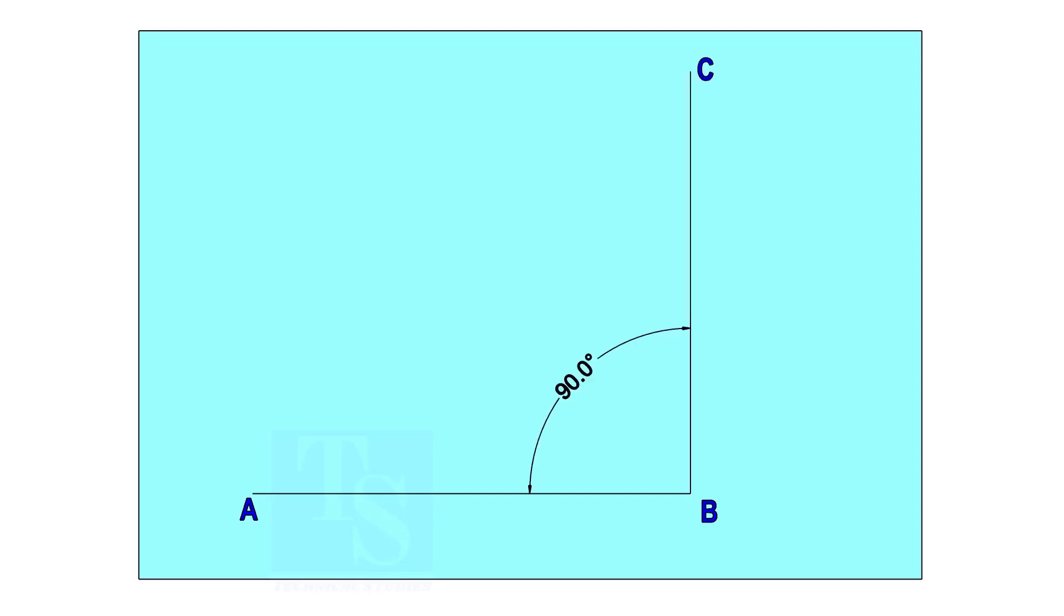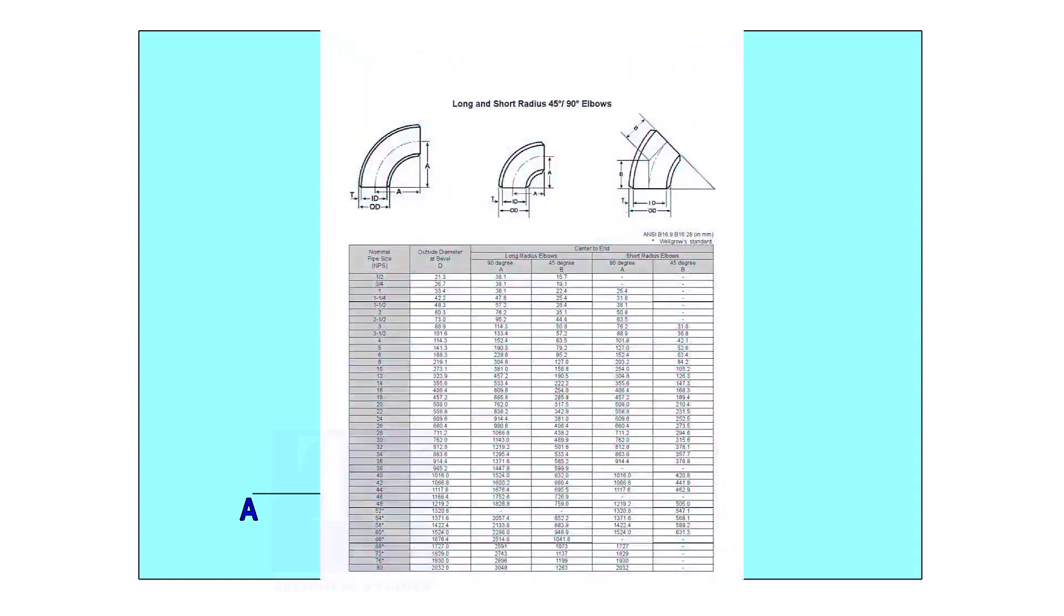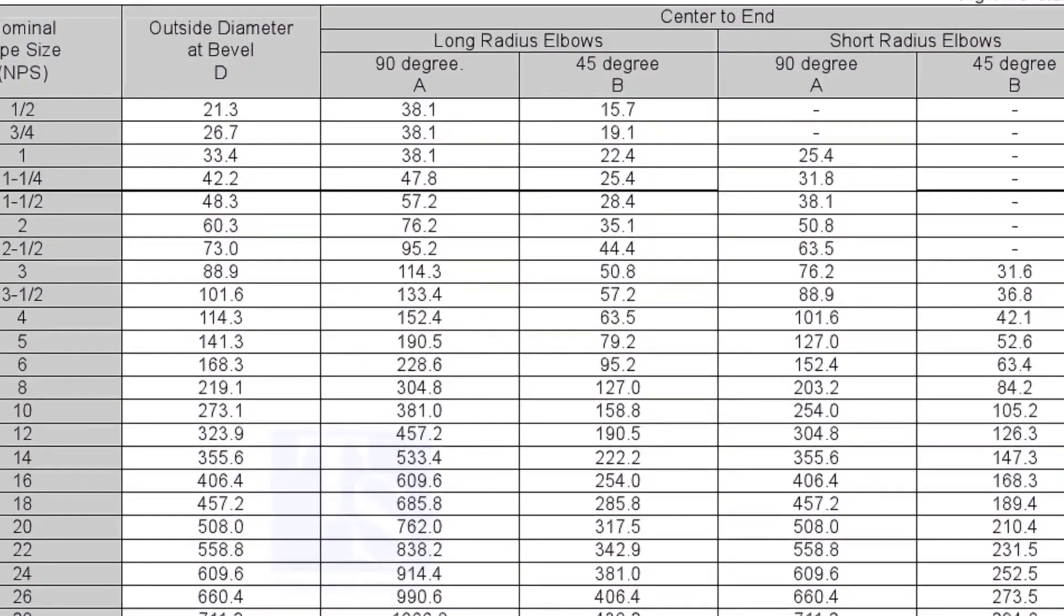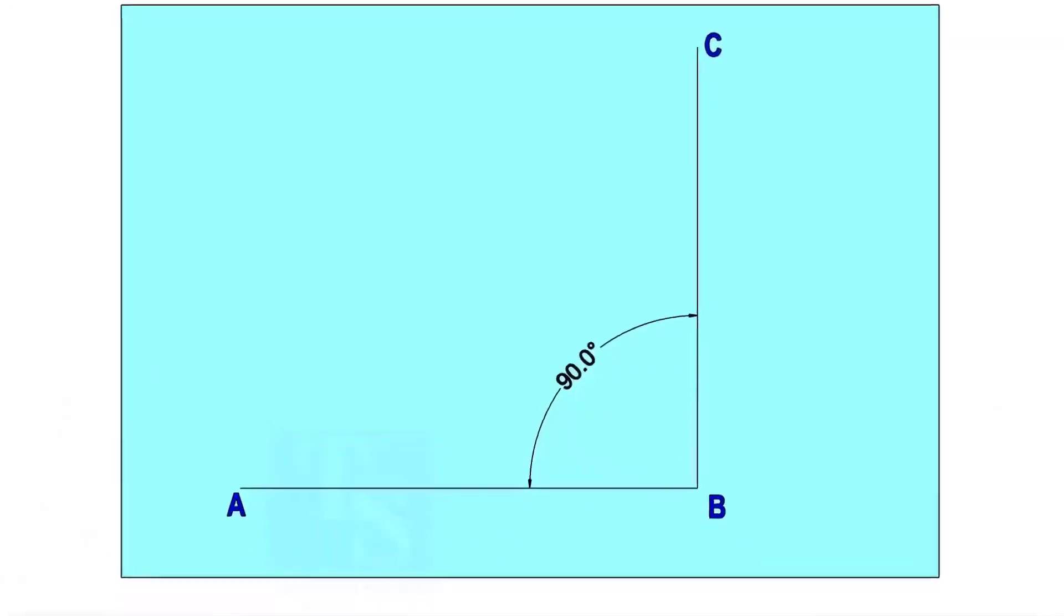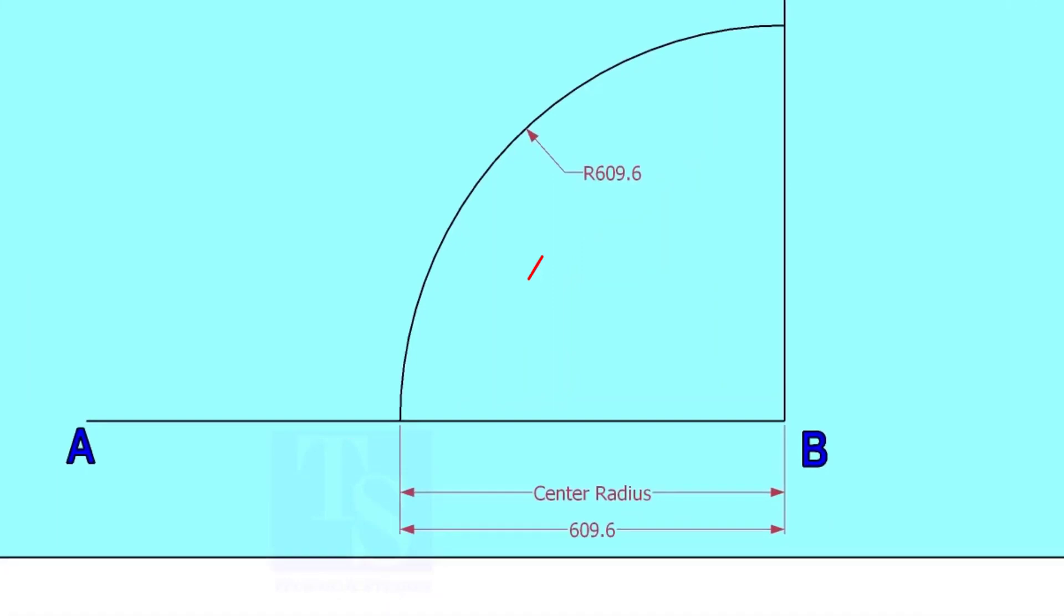Mark line AB and a perpendicular line BC. Let us check the center radius of 16-inch long radius elbow. Draw an arc with the center radius 609.6 millimeters.